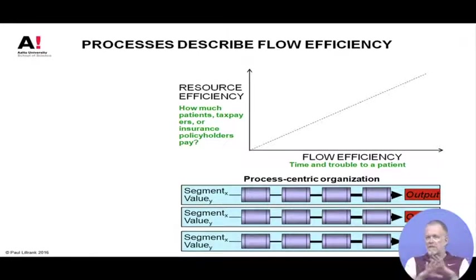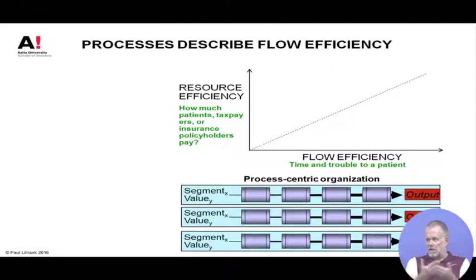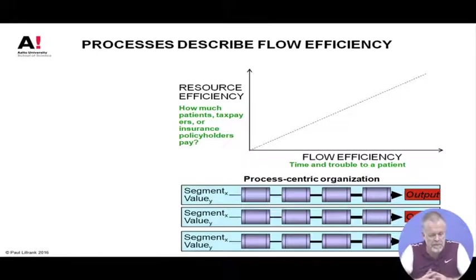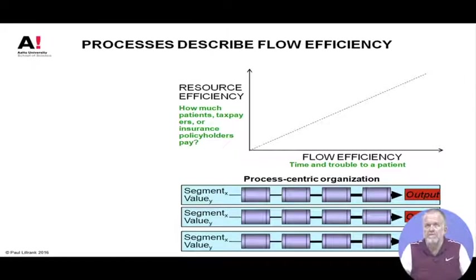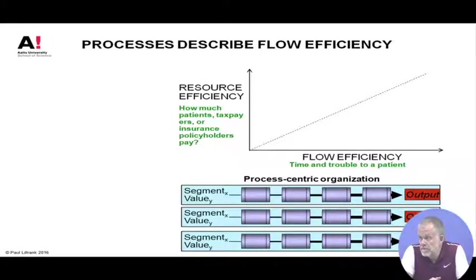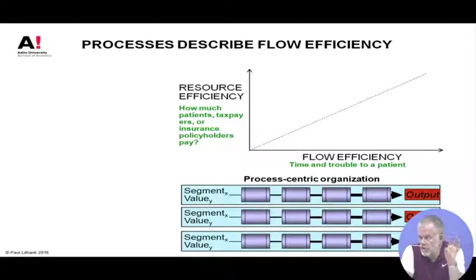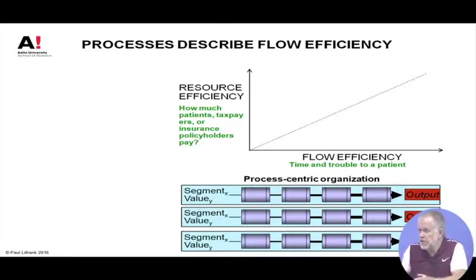It depends on what you're talking about, because every production system has its different logical production structure and cost structure. The trick is to somehow get these two things in order. If you want to get the KPIs on resource efficiency, that is quite easy to measure — the resources can usually be identified: a person working, a machine that works, a room occupied or not.